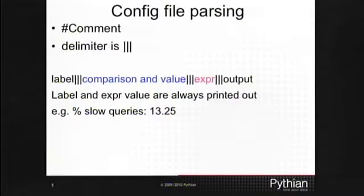In the config file, comments start with a hash and each line is broken into four fields: the expression in red, the comparison operator and value in blue, the label, and the output if the comparison matches when the --recommend option is used.